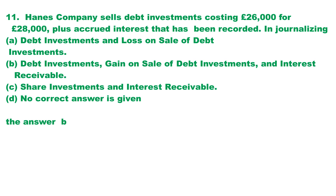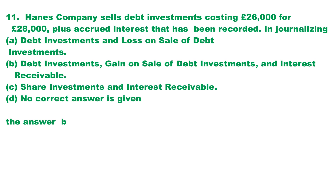Question 11. Hain's company sells debt investments costing £26,000 for £28,000 plus accrued interest that has been recorded. In journalizing the sale, credits are to: A. Debt investments and loss on sale of debt investments. B. Debt investments, gain on sale of debt investments, and interest receivable. C. Share investments and interest receivable. D. No correct answer is given. The answer is choice B.